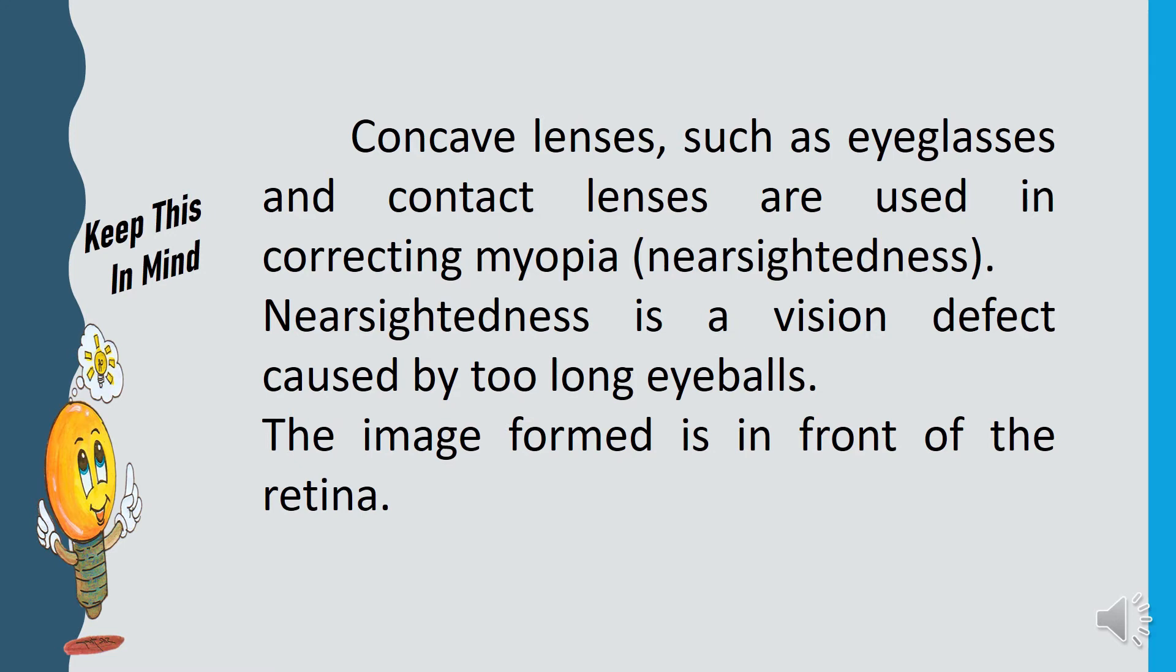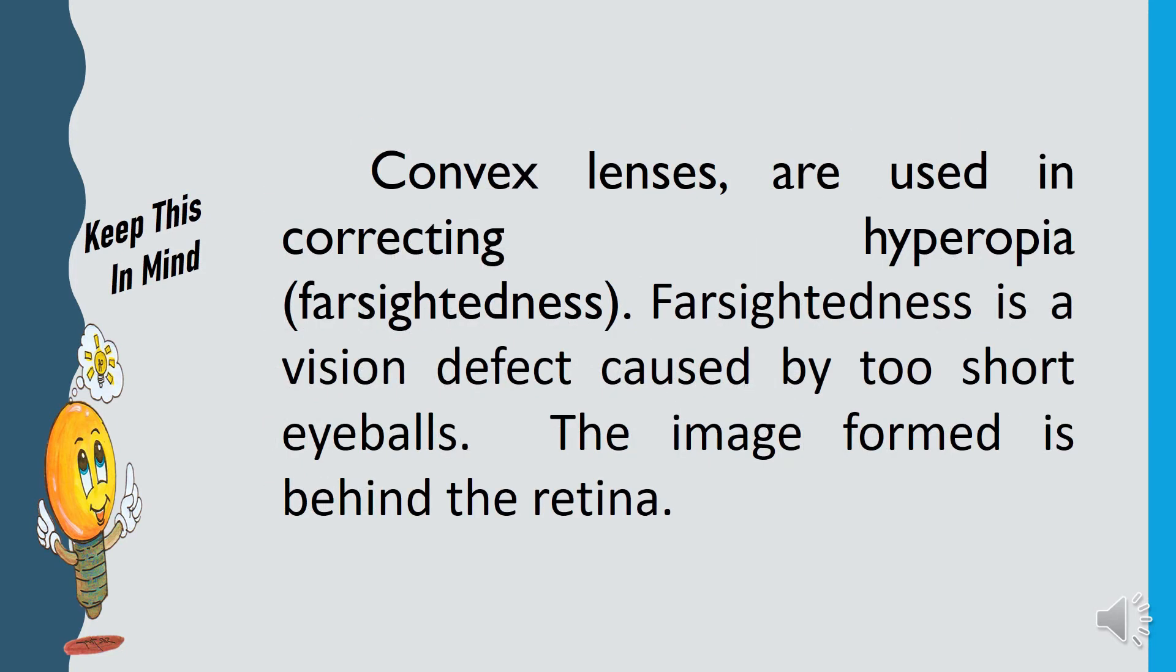Concave lenses such as eye glasses and contact lenses are used in correcting myopia or nearsightedness. Nearsightedness is a vision defect caused by too long eyeballs. The image form is in front of the retina. On the other hand, convex lenses are used in correcting hyperopia or farsightedness. Farsightedness is a vision defect caused by too short eyeballs. The image formed is behind the retina.